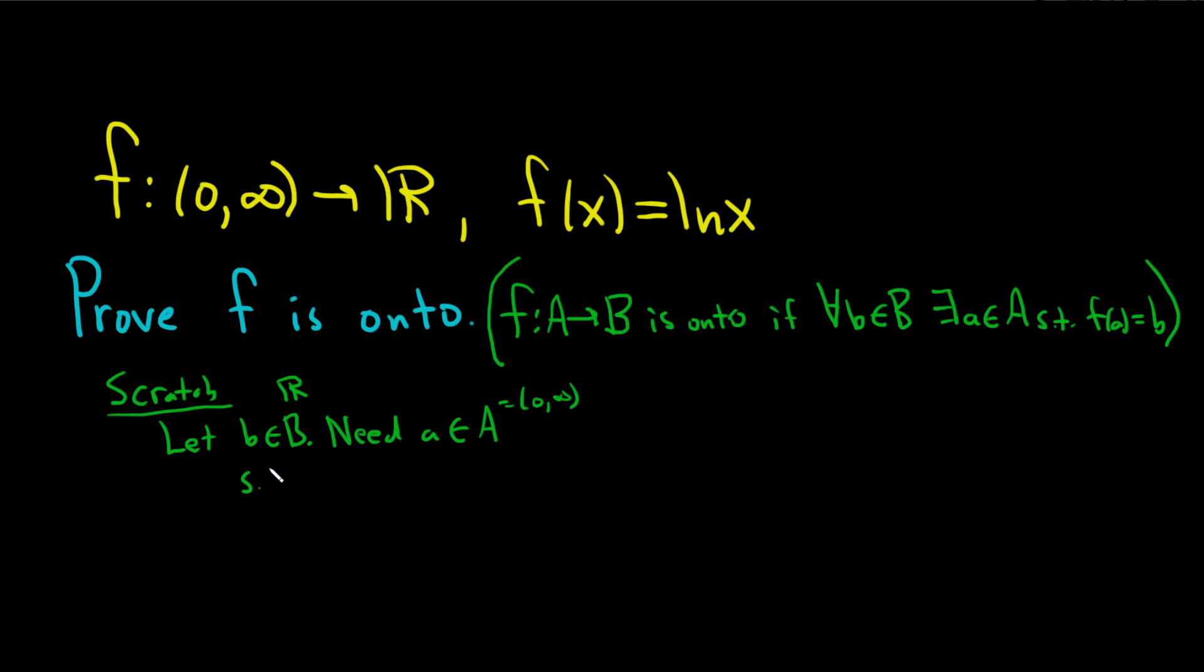Such that f(A) is equal to b. Well what's f(A)? Well f(x) is ln x, so we need ln of A equal to b. Okay, we have to find A.